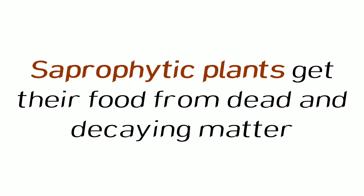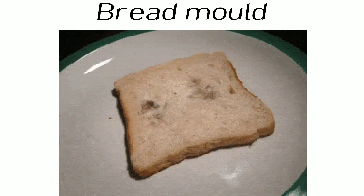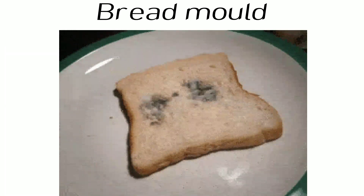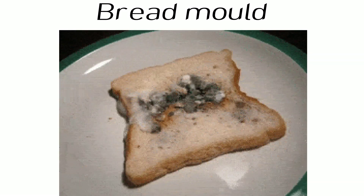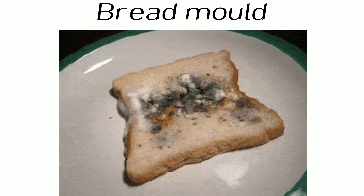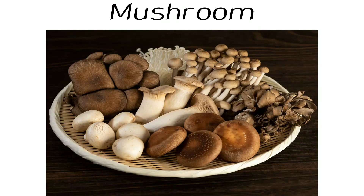Saprophytic plants get their food from dead and decaying matter. Examples include bread molds — which you may have seen at home — and mushrooms. These tasty mushrooms that we eat come under the category of saprophytic plants.